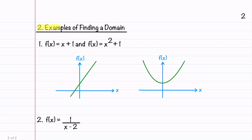Let's now walk through our five example problems. Our first example has two functions: the first one is a linear function, and the second one is a quadratic function. Both of these are polynomial functions. I've graphed both of these functions so that we can understand the domain better. All real numbers x can be inputs into these functions, so the domain can be written in interval notation as minus infinity to infinity.